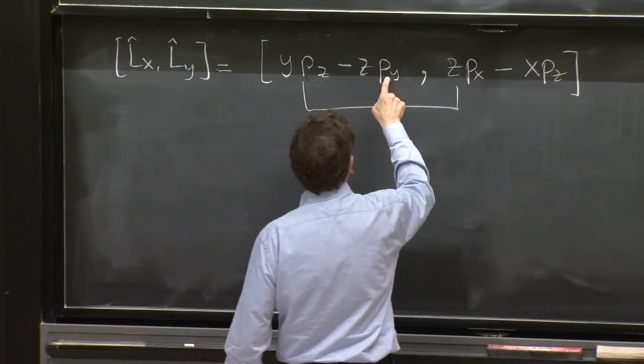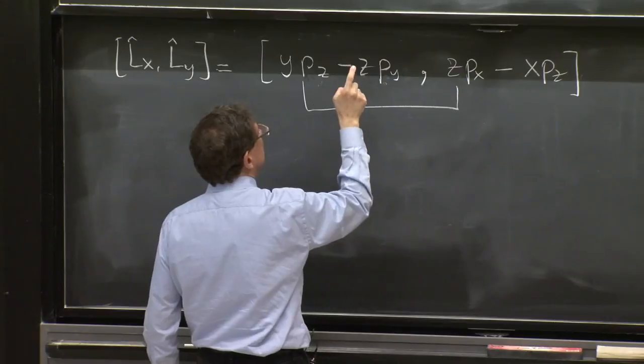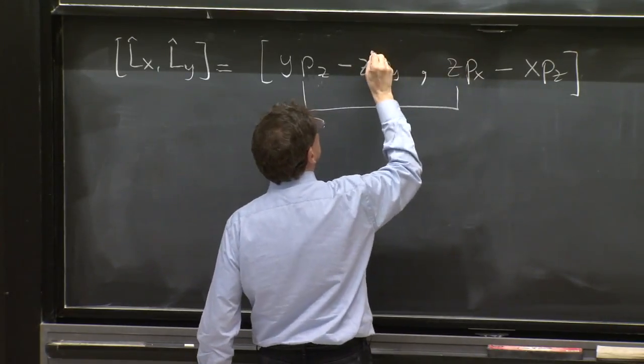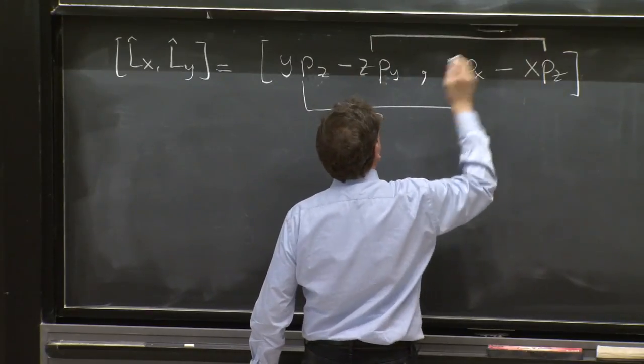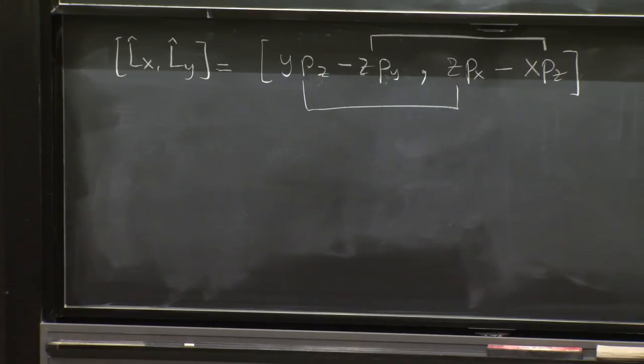And here, the z py, the py doesn't care about anybody here. But the z doesn't care about that z, but it does care about this pz. So the only contribution, there could have been four terms out of this commutator, but only two are relevant. So let's write them down.